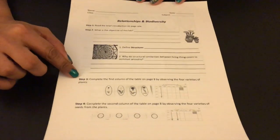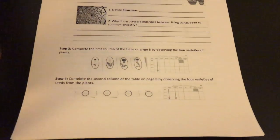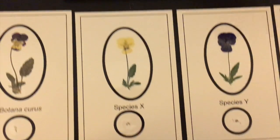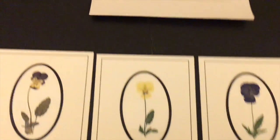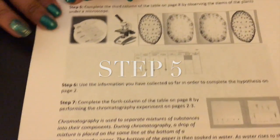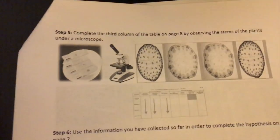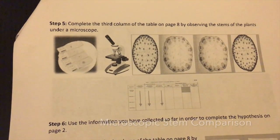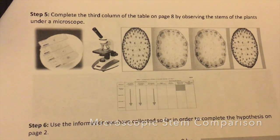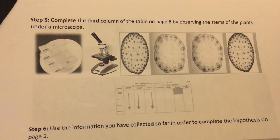Once students have completed step three — the comparison of the plants — and step four — the comparison of seeds — they will move on to step five, which involves the microscopes. It helps to bring out the microscopes and set them up for students while they are completing columns one and two.